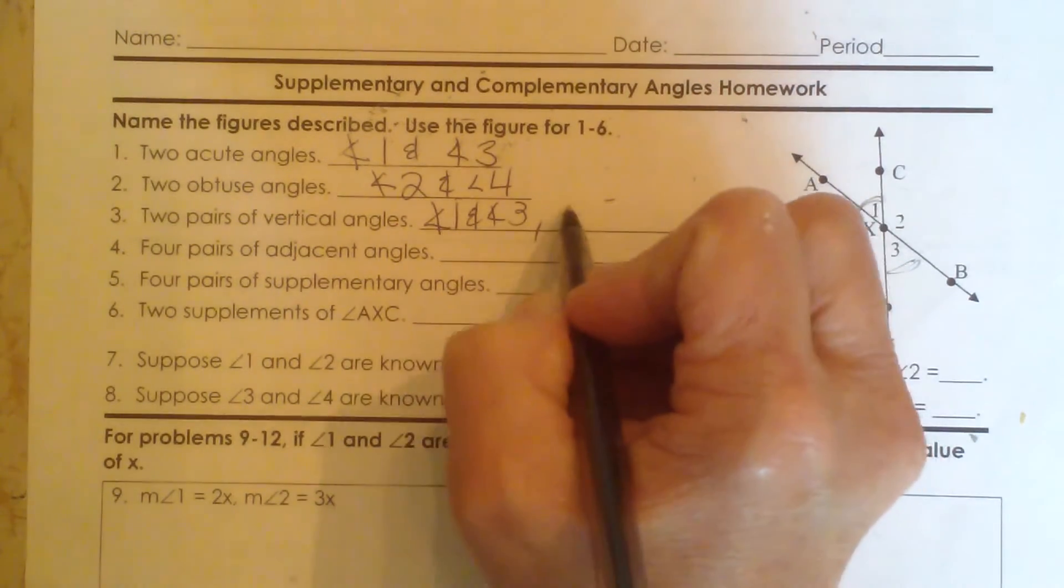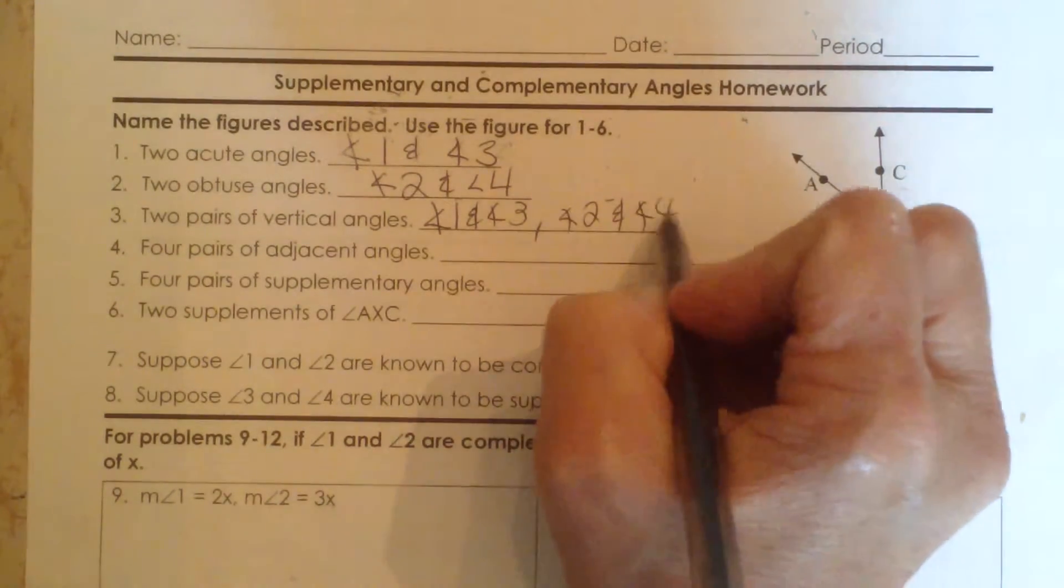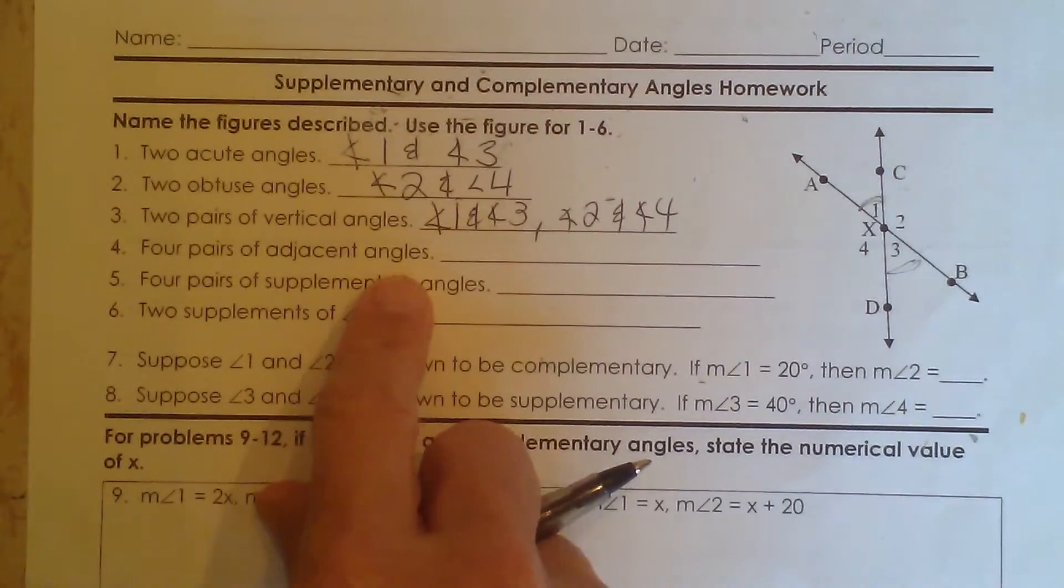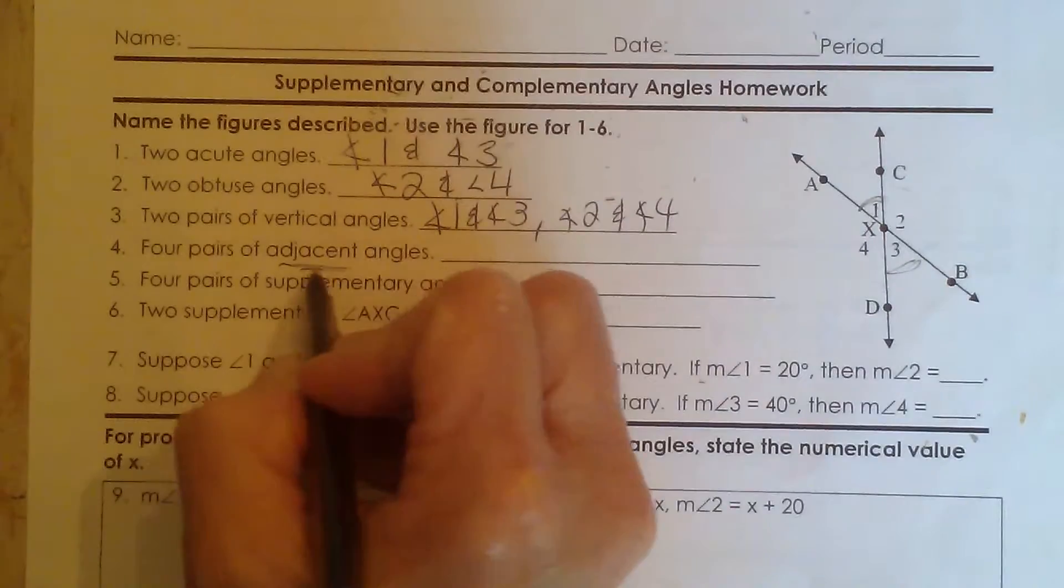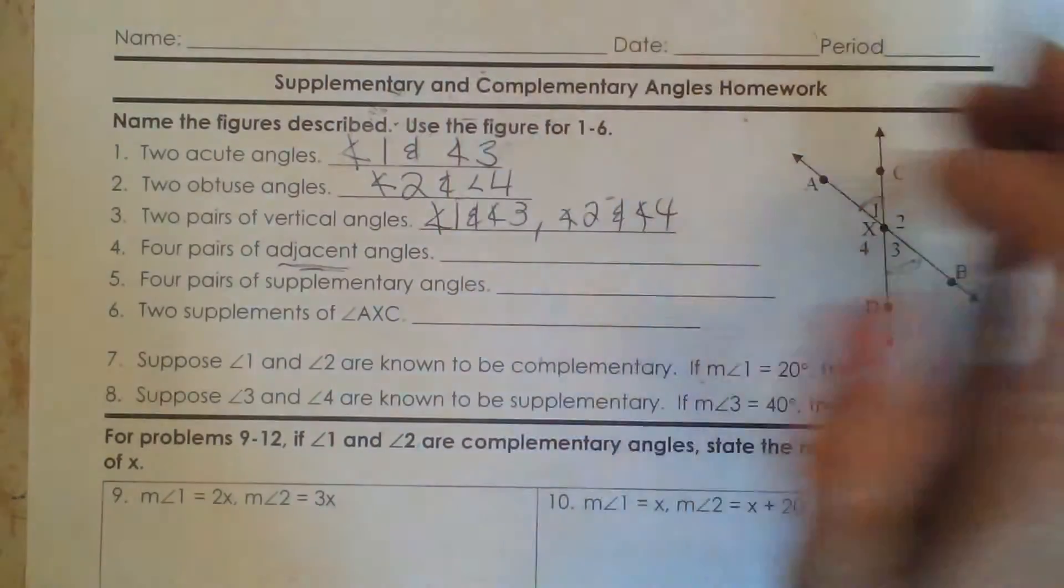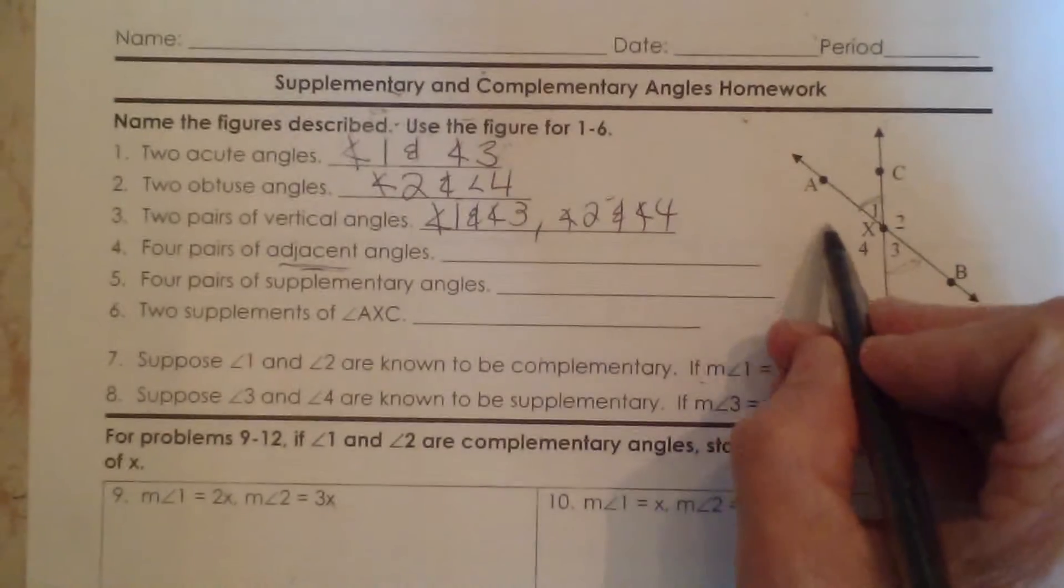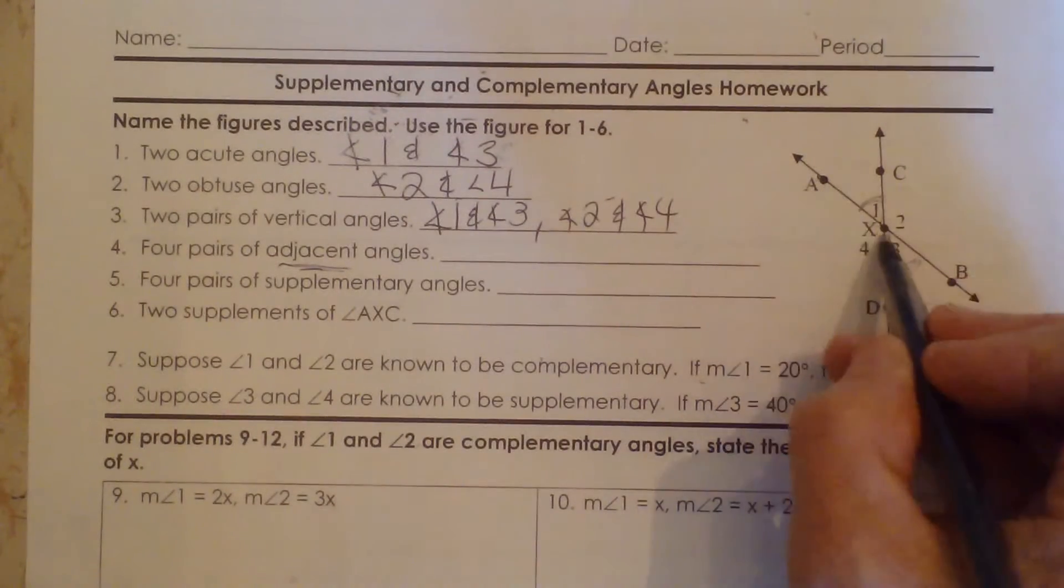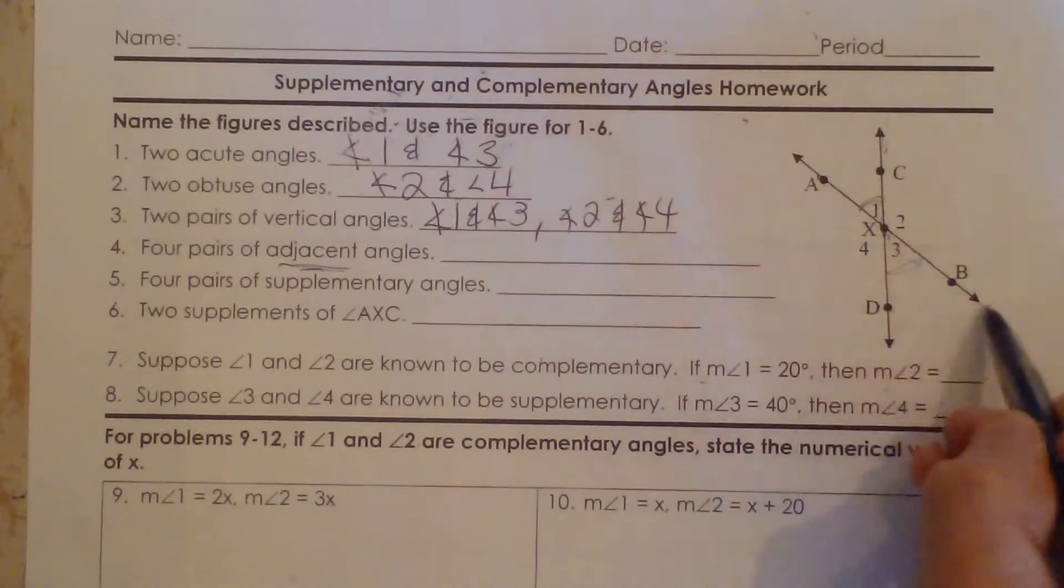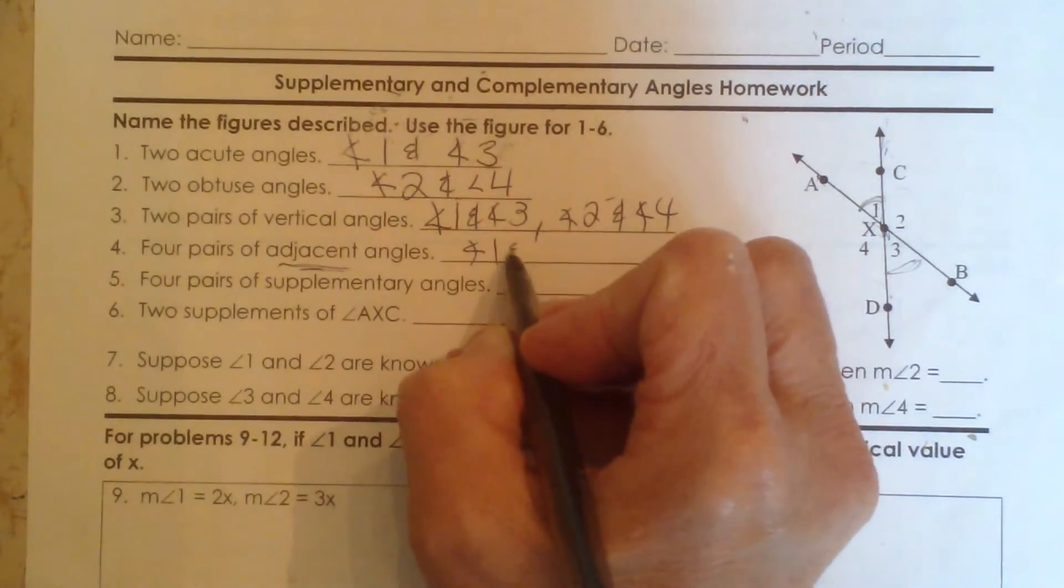Now four pairs of adjacent angles. So I need to find four pairs. Adjacent just means next to or sharing a side. So if I look at this diagram and I look at angle 1 and 2, I see they share this side right here, XC. So from here I've got an angle AXC and CXB, and they share this common side of XC. Therefore angle 1 and angle 2 are adjacent.